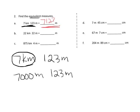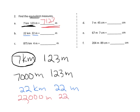Similarly, question B: 22 kilometers plus 22 meters. Each kilometer is 1,000 meters, so this is 22,000 meters plus the extra 22 meters, meaning we have a total of 22,022 meters. And you get the idea.